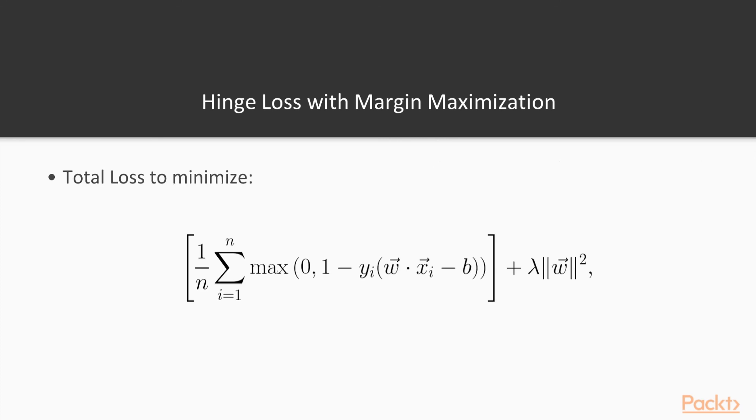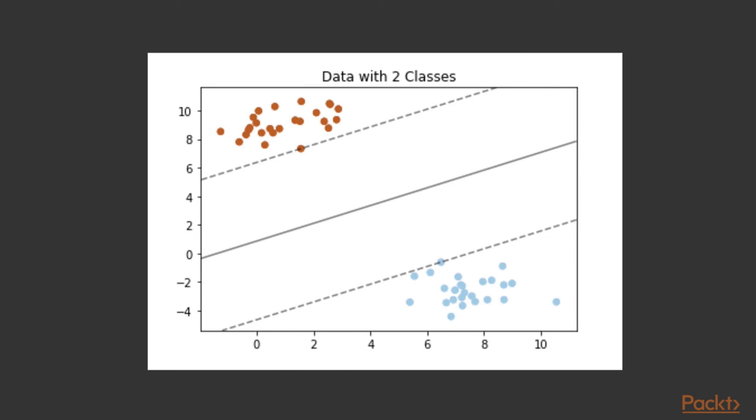So the expression would be the average hinge loss for all of the points in our data set that we classify, plus lambda times the magnitude of the w vector squared. Lambda is a trade-off between how much we care about the margin and about the hinge loss. So this is a hyperparameter that can be tuned. And with the proper optimizer, you'll get the proper solution like this, where the max margin line is found and the support vectors on each side are classified correctly.